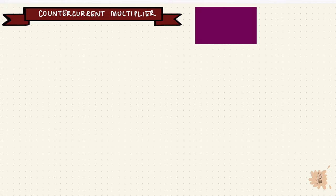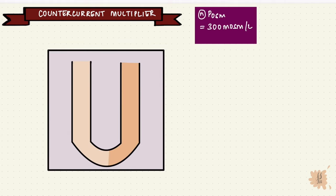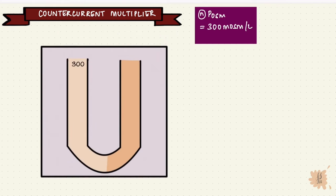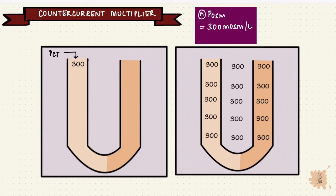The plasma osmolarity is 300 milliosmoles per liter. So to understand the countercurrent multiplier, we're going to use this schematic diagram of the loop of Henle, with its thin descending limb, the thick ascending limb, and the medullary interstitium. The fluid that enters the loop of Henle from the PCT is isoosmotic, so 300. Let's put 300 through the loop. Assuming the medullary interstitium at this point is also 300.